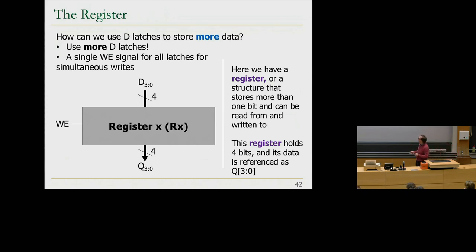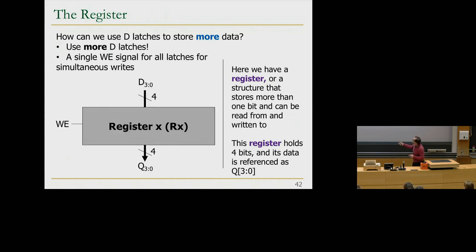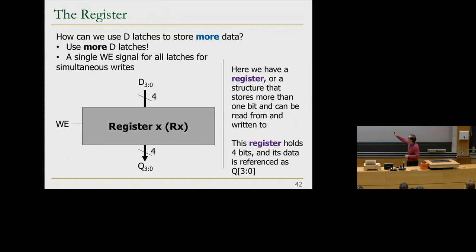At the module level, you have a D input (four bits), a Q output (four bits), and a write enable signal. The beauty of this modular view is that you don't need to know what's going on underneath the register unless you want to. You can build a register, use it as a unit in your design language, and reference it later without knowing the internal implementation — this is how we build hierarchy.